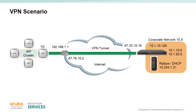We will use this configuration scenario over the next few slides as the basis for reviewing the VPN configuration steps. The IAP cluster is behind a modem in the 192.168.1.0 subnet. The modem has the IP address 192.168.1.1 and on the internet side has a public IP address of 67.76.10.2. The controller is in the DMZ and on the public side has a 47.33.10.16 IP address.